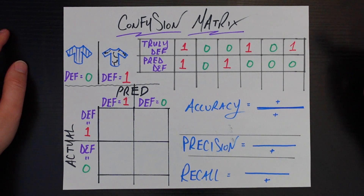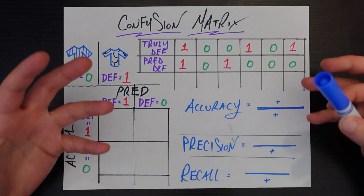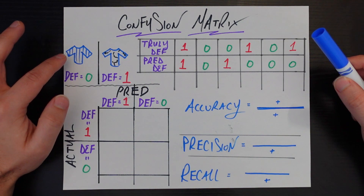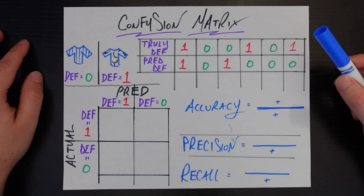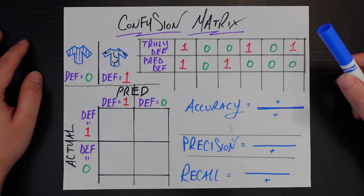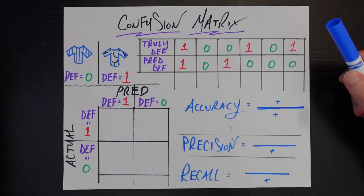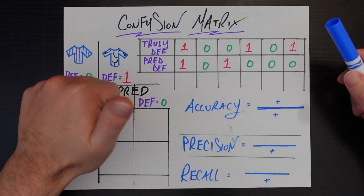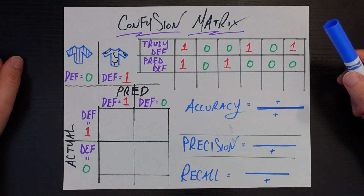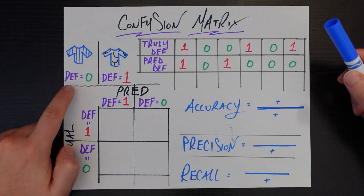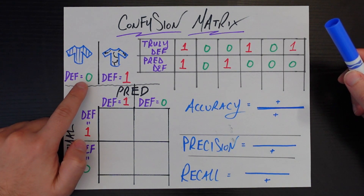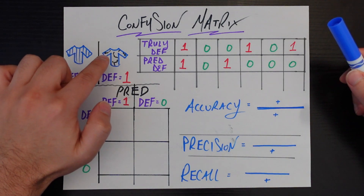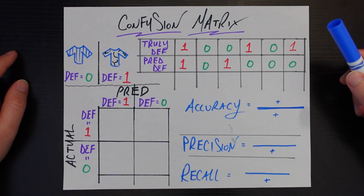So the fun little example is, let's say you've built a machine learning model that's going to take a picture of an article of clothing and tell you whether or not it's defective. So if it is defective, you can send it back, don't send it to the customer. If it's not defective, it's good to go, you can send that to the customer. So it's either not defective — defective equals zero, perfectly good article of clothing — or it is defective, like this shirt here, defective equals one.